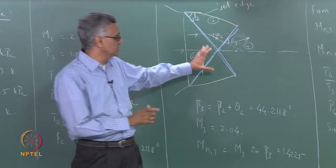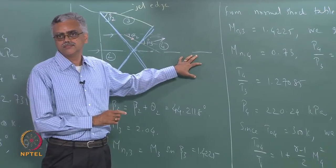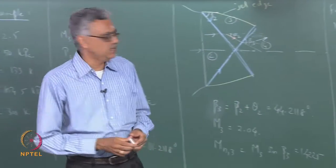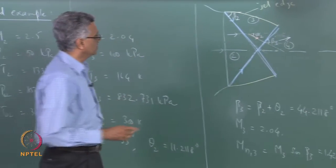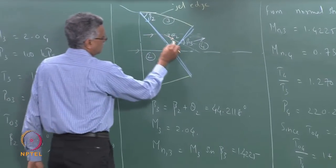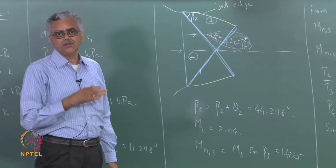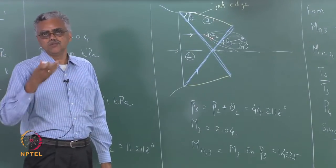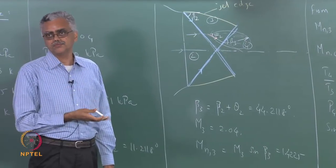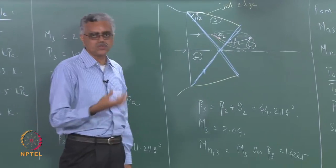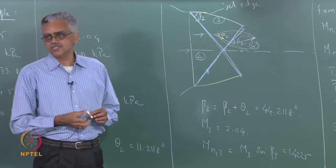We will continue this example when we reach the next chapter on expansion fans. The most important aspect of these examples is the calculation of theta and beta—always remember these angles are measured with respect to the velocity vector ahead of the shock wave. We will do another example illustrating similar calculations.